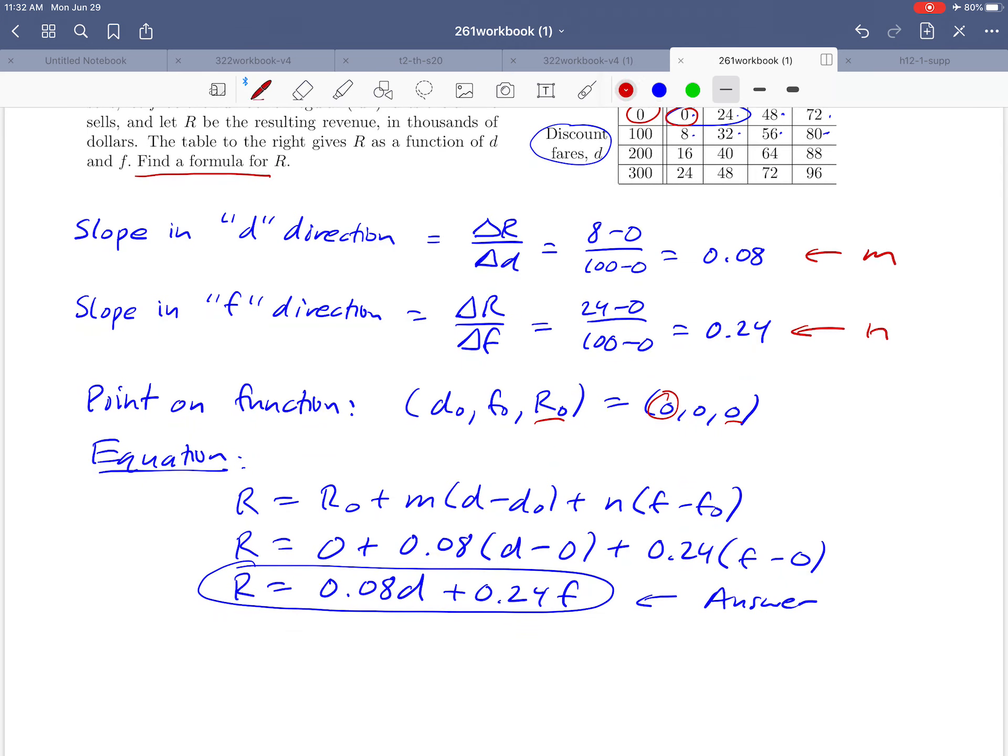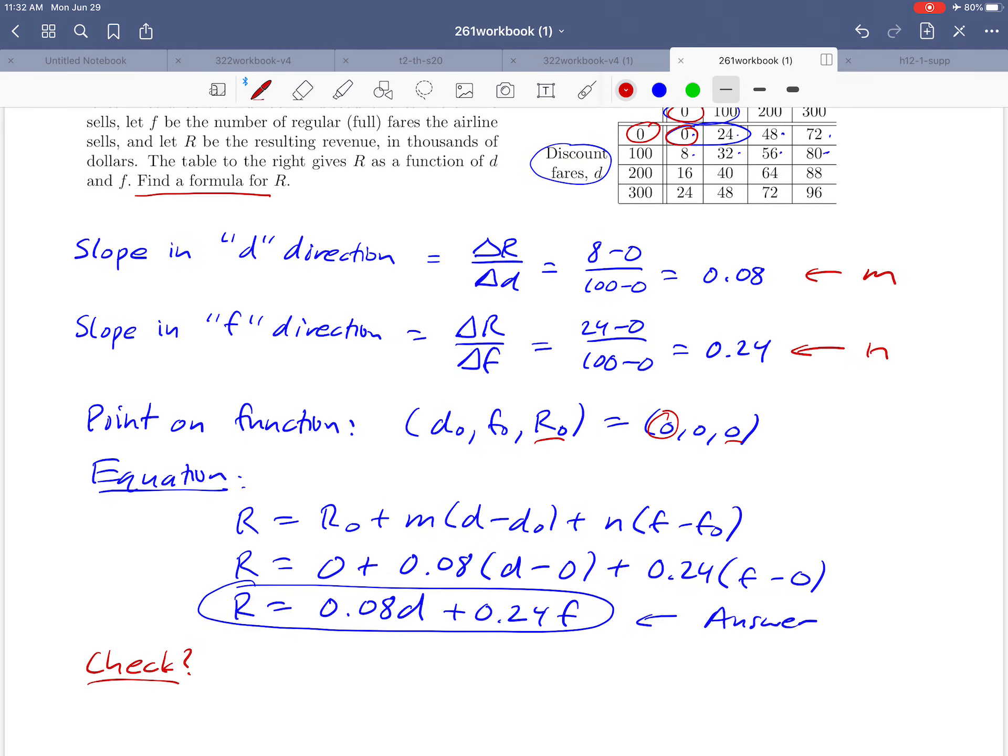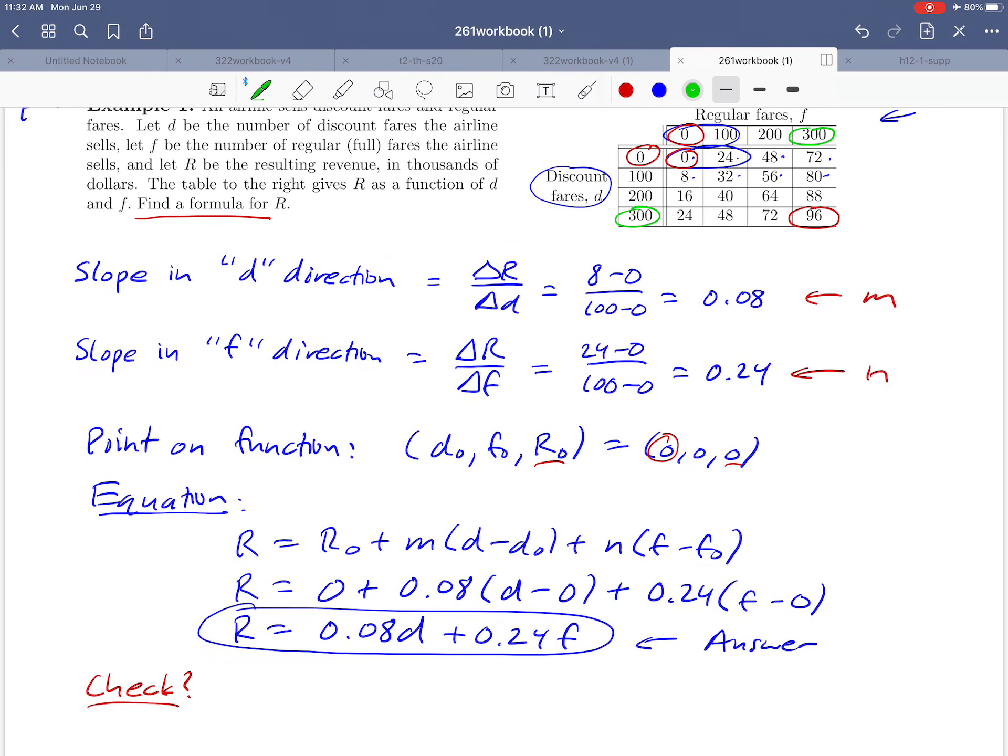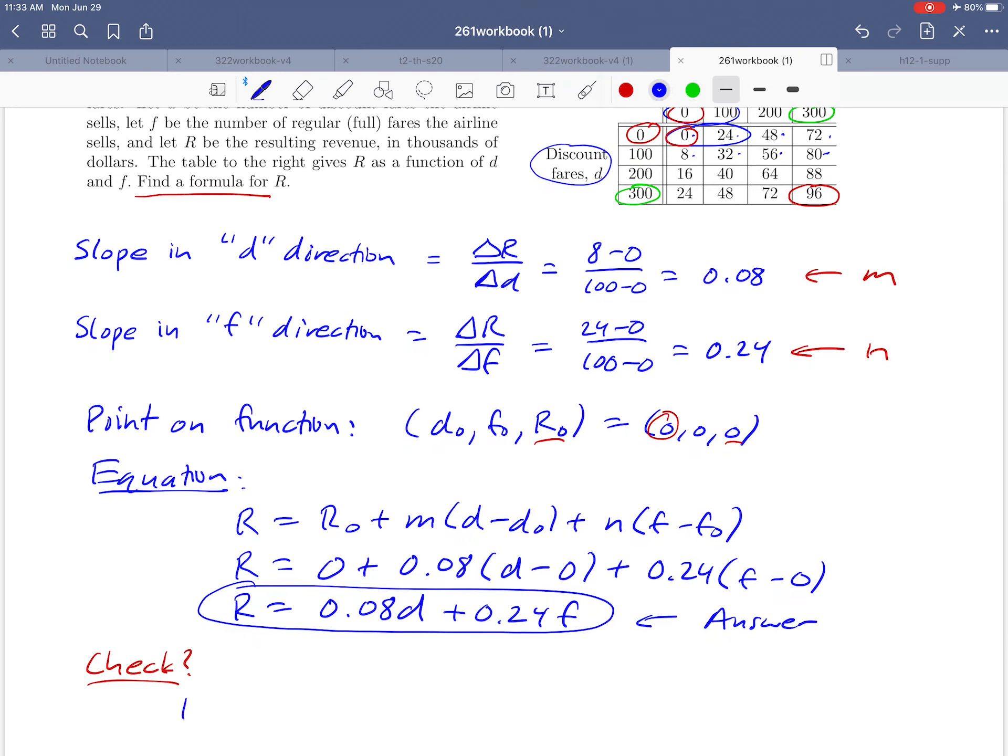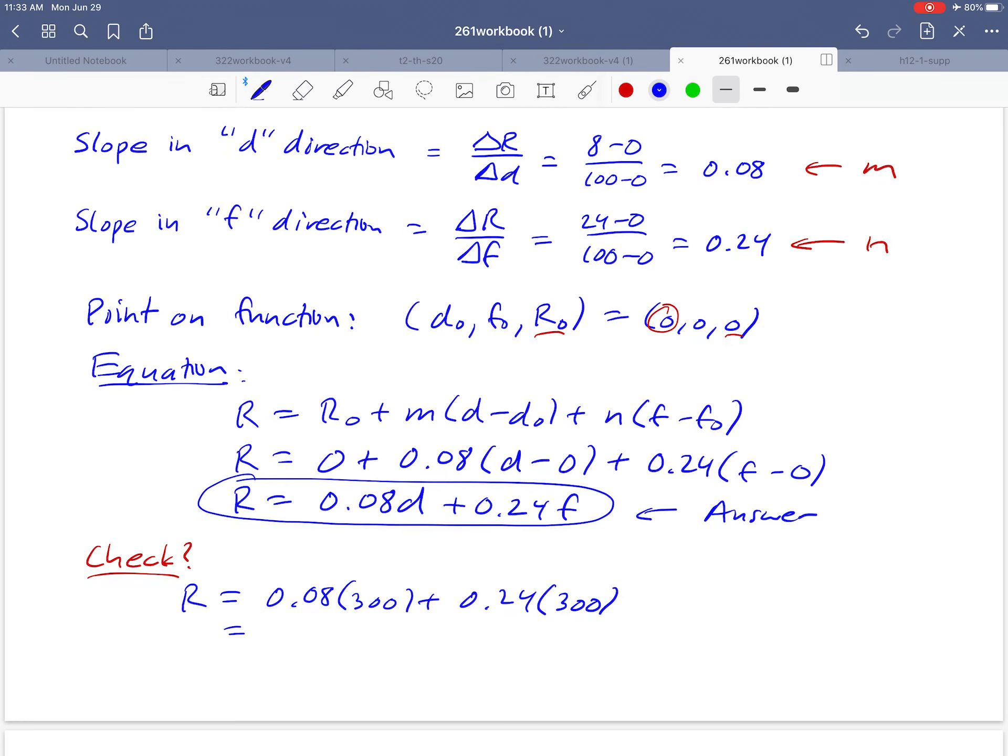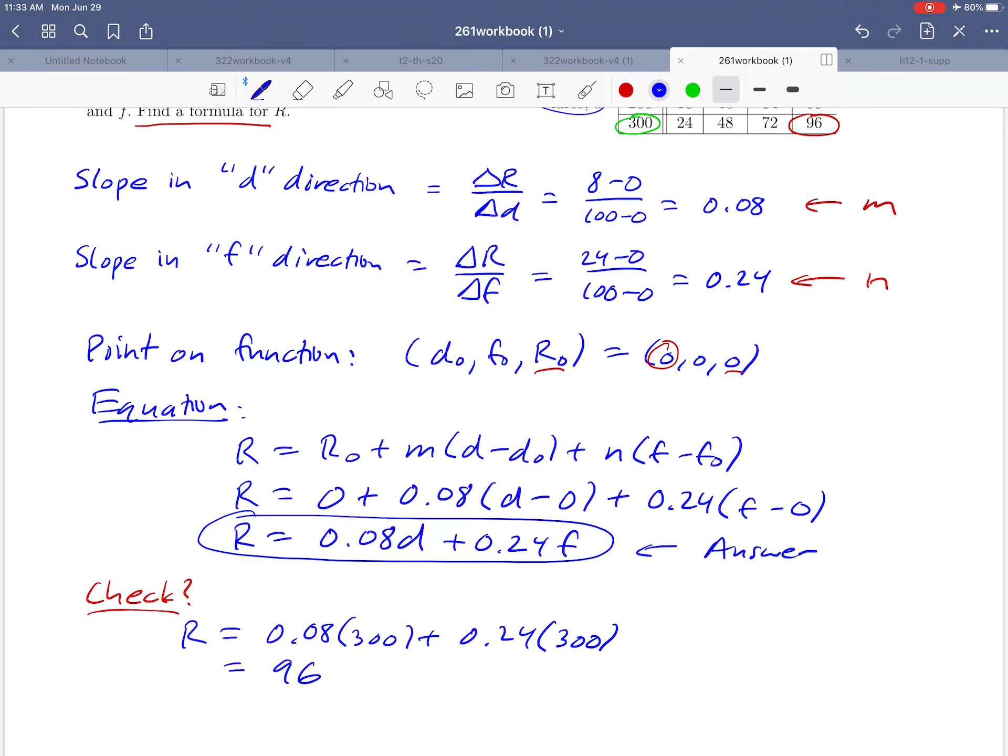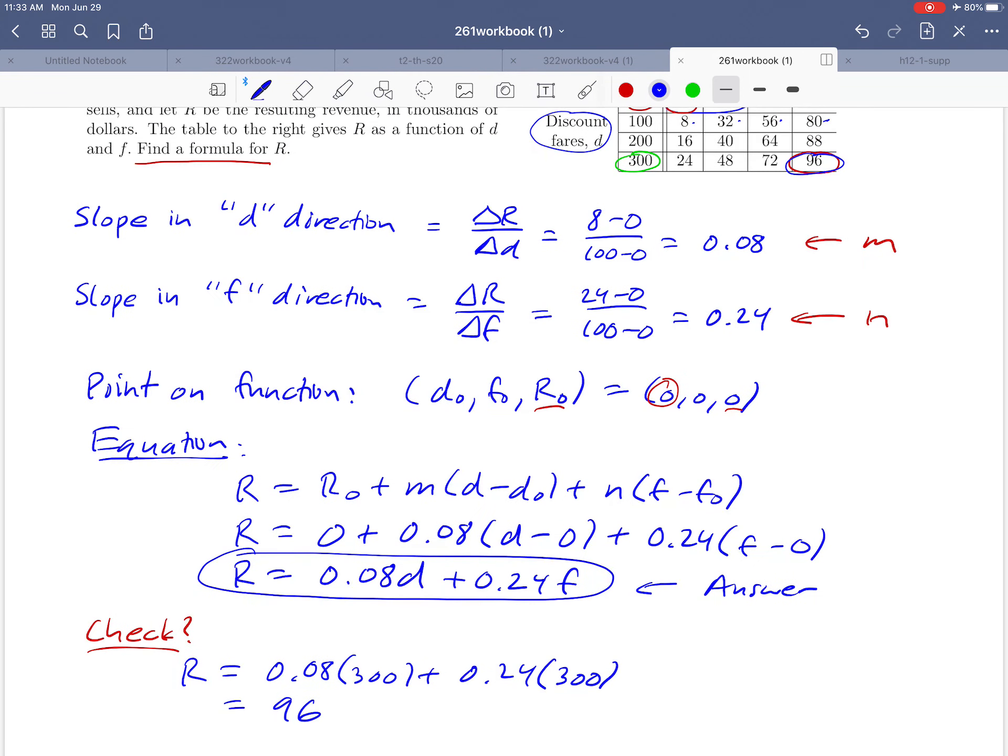Now we're done with this problem. But one question I want to throw out here is could we check that answer? Would it be possible to check our answer? Well, if this is an accurate formula, then we should be able to plug in any number for D and F that we want to and confirm any number in the table that we have. So let's just pick on one. Maybe the 96 here. So that comes from these two values of D and F. If we plug in 300 for D and F, we should get out 96. Let's see if that really happens with the formula that we came up with. So 0.08 times D, which is 300, plus 0.24 times F, which is 300. And you can take out your calculator, actually do the arithmetic and confirm that when you do that, what comes out is a revenue of 96. That agrees in our table up here with the 96 that we have here. And if our formula is right, you should be able to carry out that experiment with any point in the entire table.